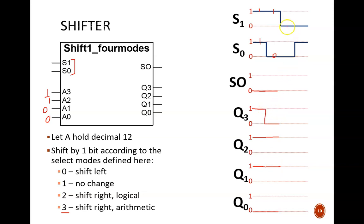In the third time slot, the mode is shift left. Therefore, A3 becomes the shift out bit, so SO is high. A2 becomes Q3, so Q3 is high. A1 becomes Q2, so Q2 is low.